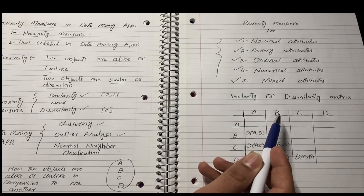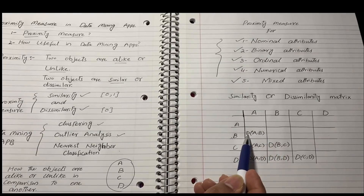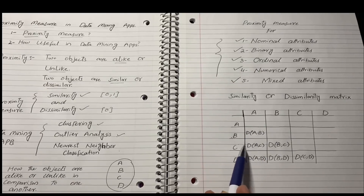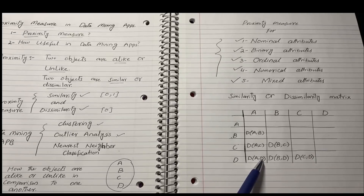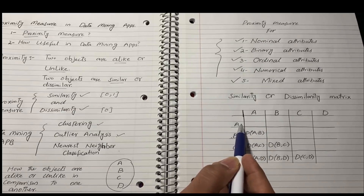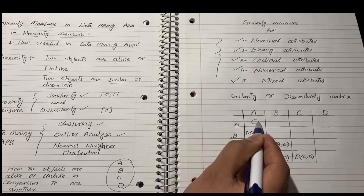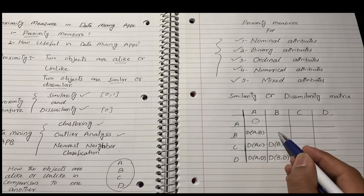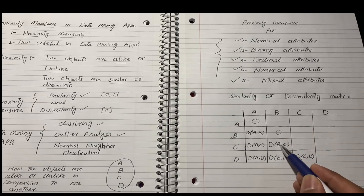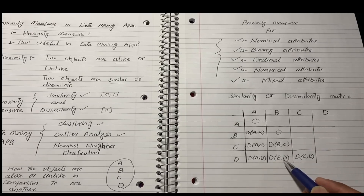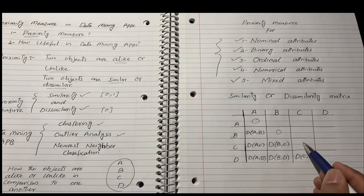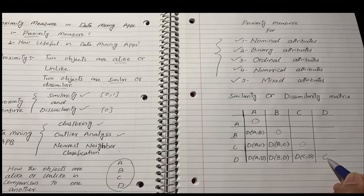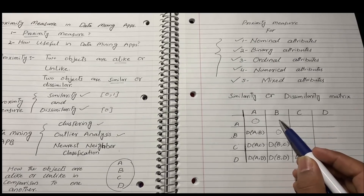The matrix entries represent pairwise differences: d(A,B), d(A,C), d(A,D), and so on. The difference between any object and itself — for example A and A — will always be zero. The same applies to B and B, C and C, and D and D, so the diagonal of the matrix is always zero.